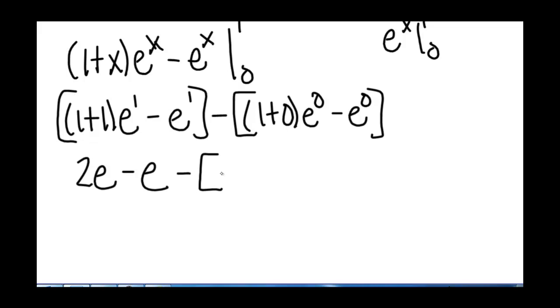e to the 0 is 1. Minus e to the 0 is 1. So 2e minus e leaves us with e, and 1 minus 1 is 0.